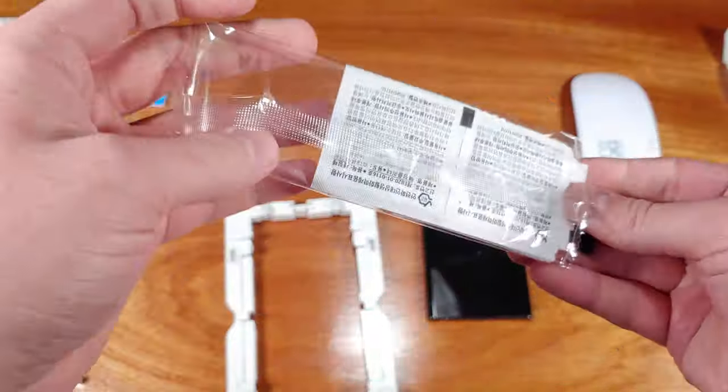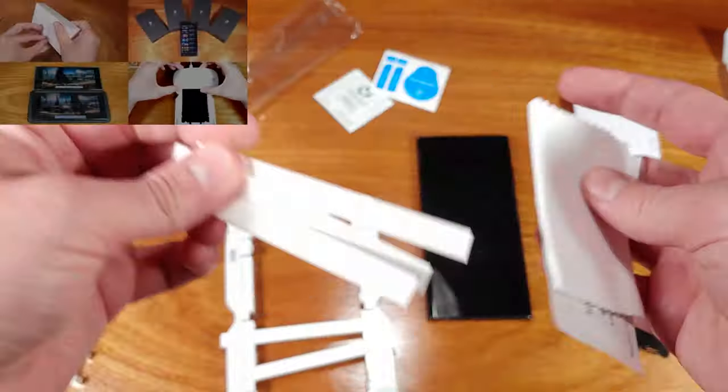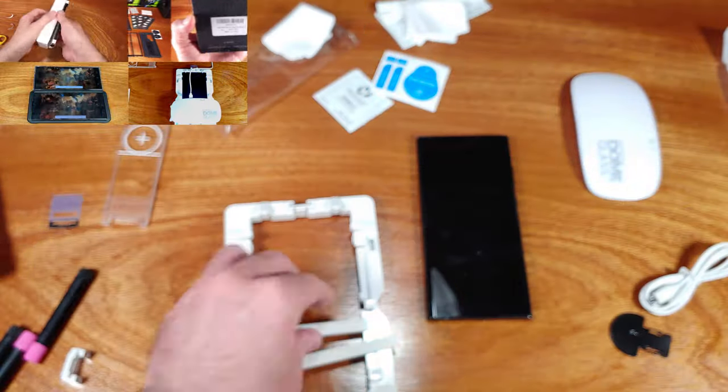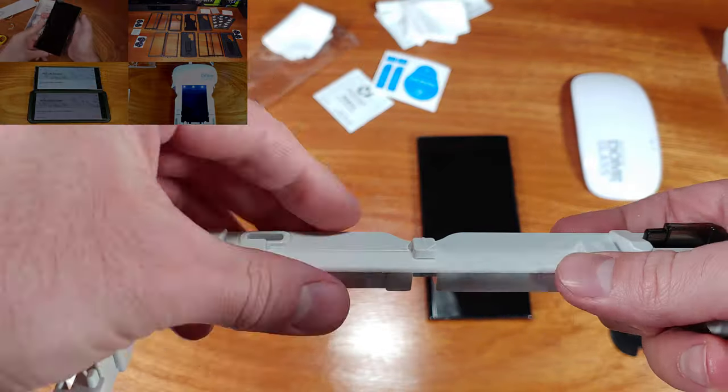You're also going to get the jig for holding onto the phone during the process, alcohol cleaning pads, the dust collection and liquid protection stickers, and you also get some cleaning materials. There's a lot more to this kit than I previously had thought there would be, but it seems to be very complete.